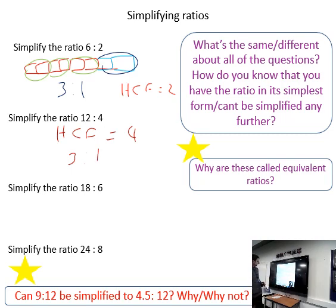Here the highest common factor of 18 and 6 will be six, so we can divide both parts by six. This would be three to one.